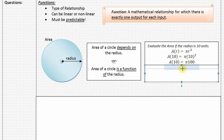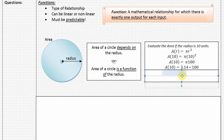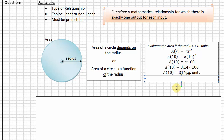If we wanted to approximate using the value of 3.14, we could continue our calculations and say 100 times 3.14 — substituting in this approximation for pi — and that would be 314 square units. So here we've used this function, area of a circle as a function of radius, and evaluated it for a circle with a radius of 10.